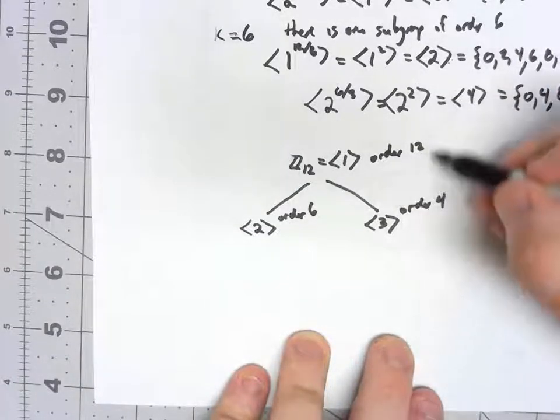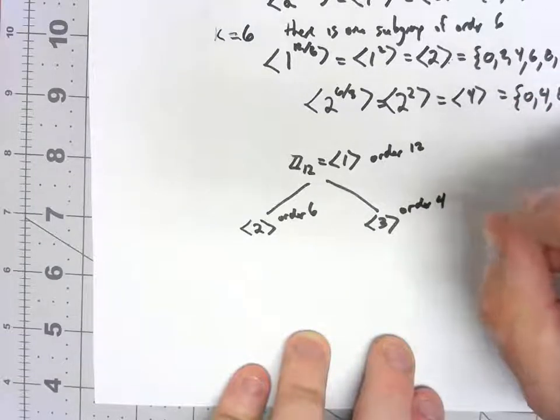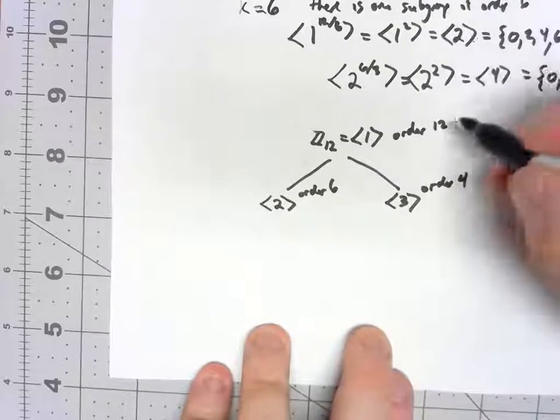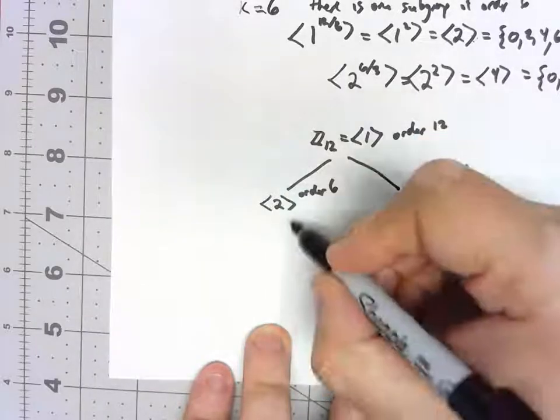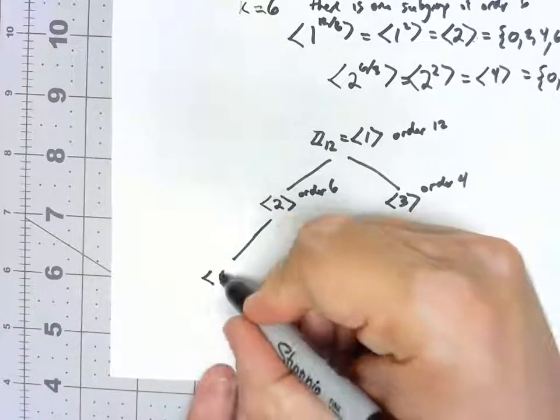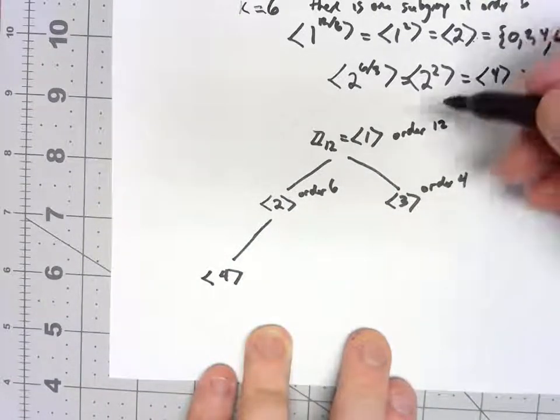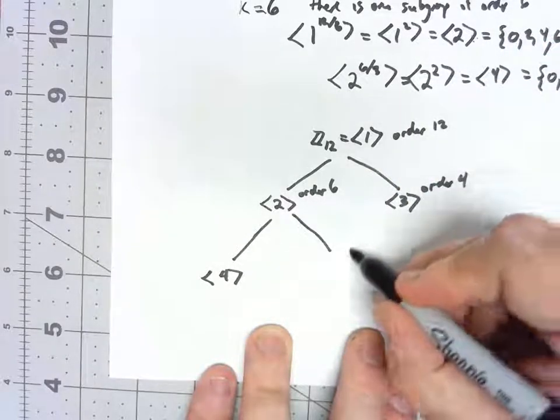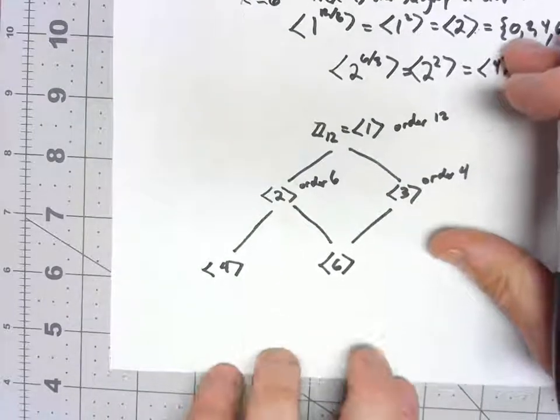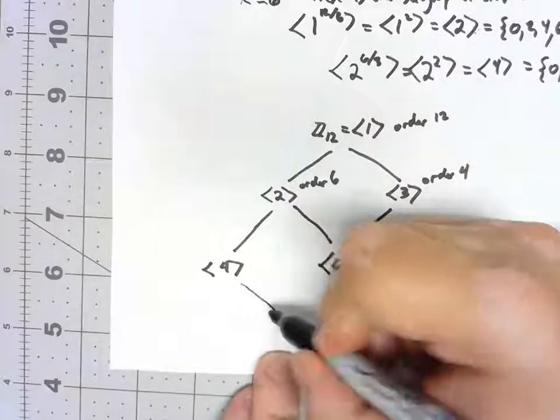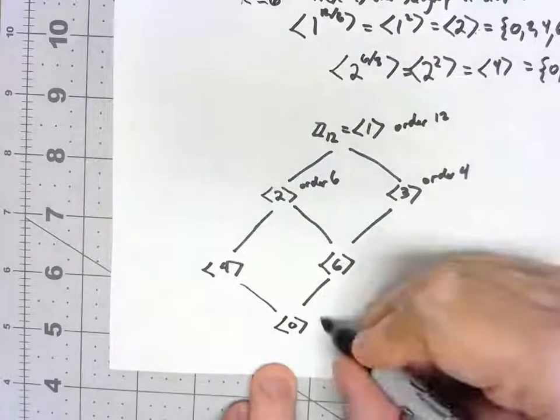There are a couple of other subgroups. Again, we have more divisors of 12. We would have one which is of order 3. The one of order 3 is the subgroup generated by 4. There's a subgroup of order 2, which is the subgroup generated by 6. And then finally, there's a single subgroup generated by 0. That's the only thing with order 1.